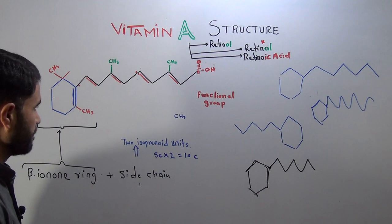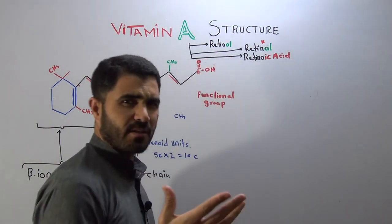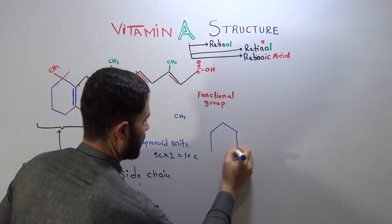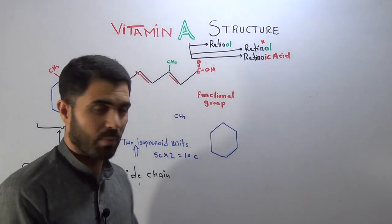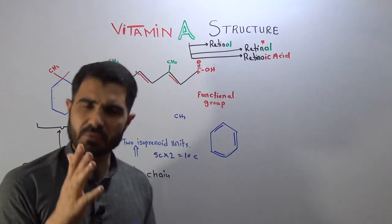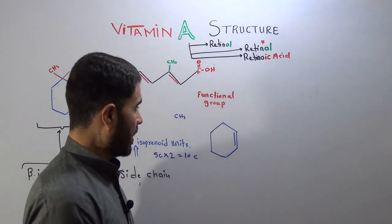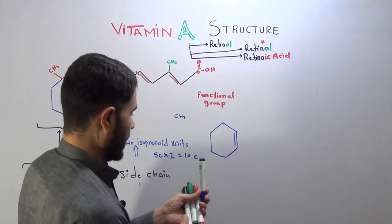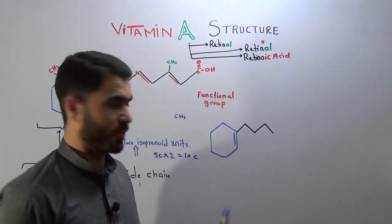If you want to write the structure of vitamin A, first of all, write a ring structure — everyone is familiar with the structure of benzene. In benzene we have three double bonds: double bond, single bond, double bond, single bond, double bond. But for the structure of vitamin A, there will be only one double bond, located exactly at one position in the ring. Now you are going to write lines in a zigzag pattern — up, down, up, down, up.